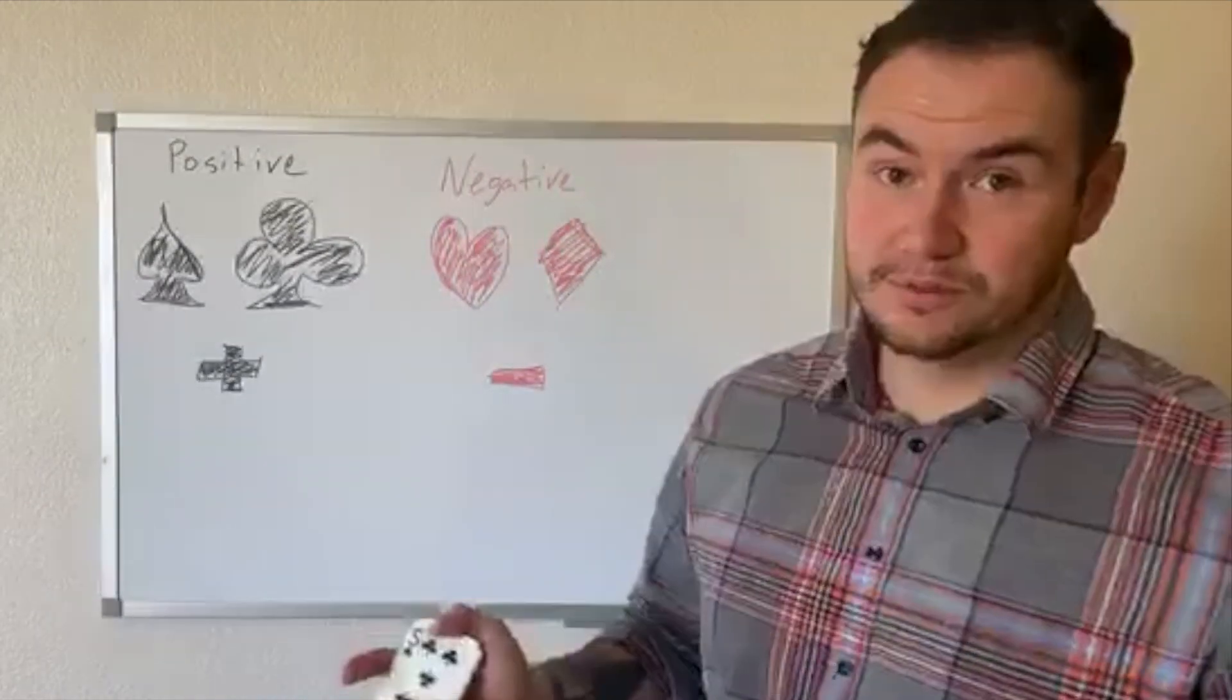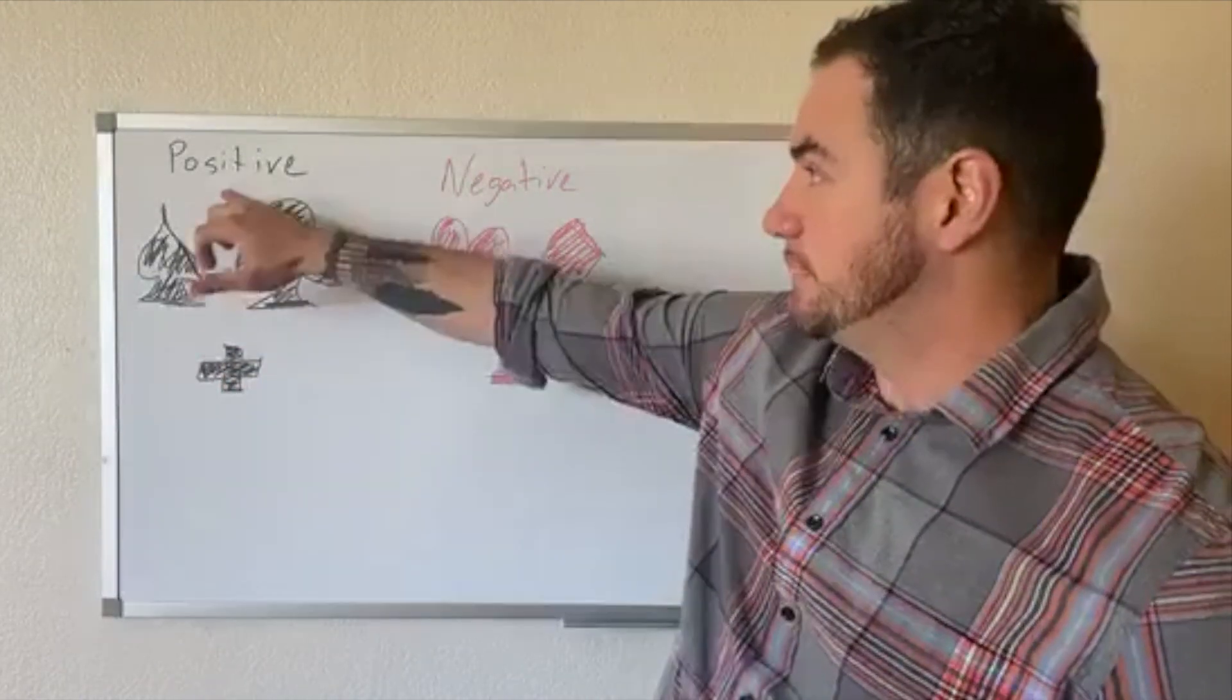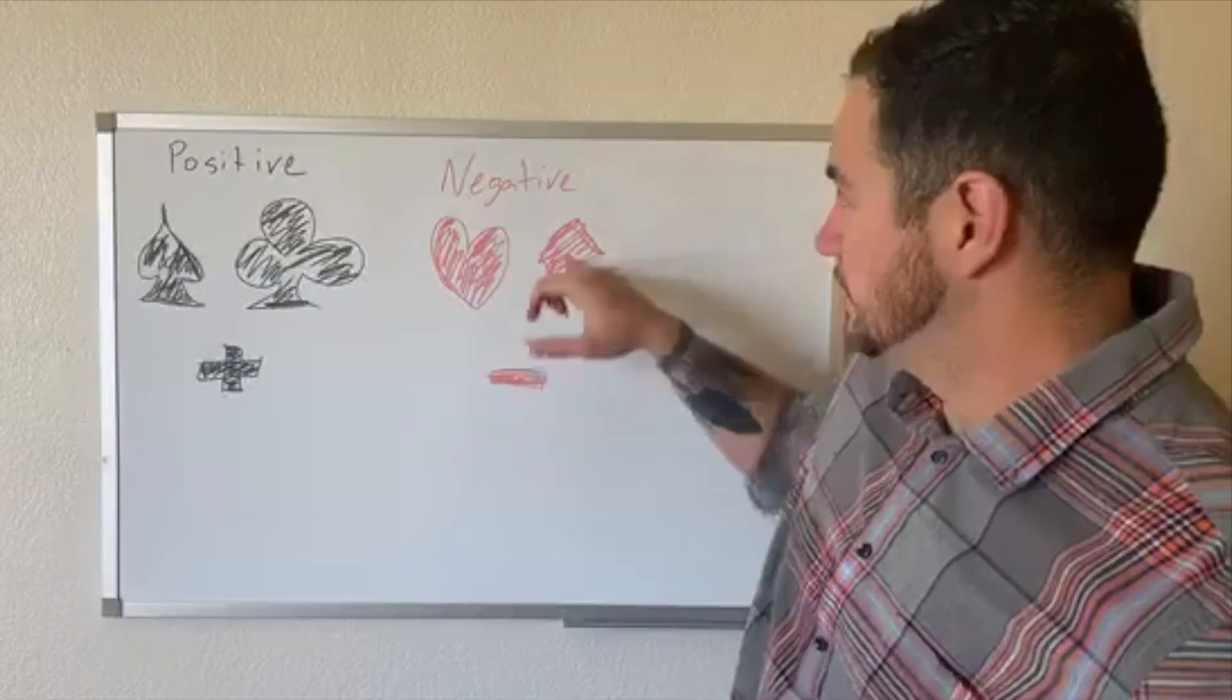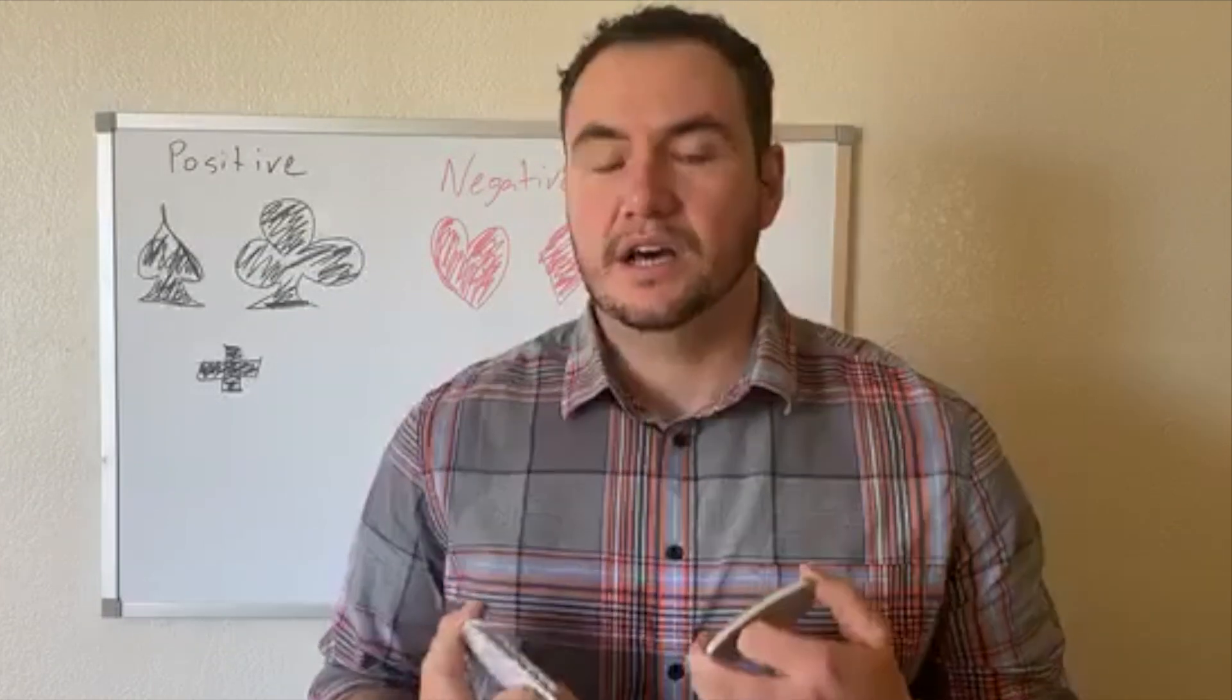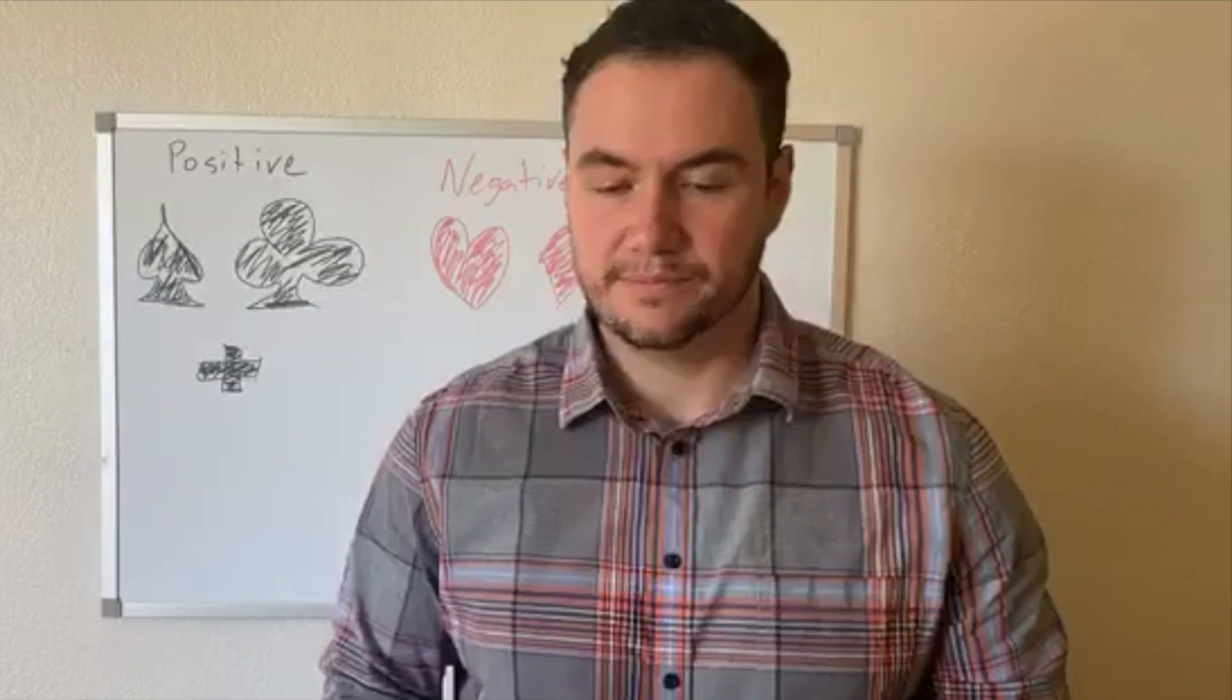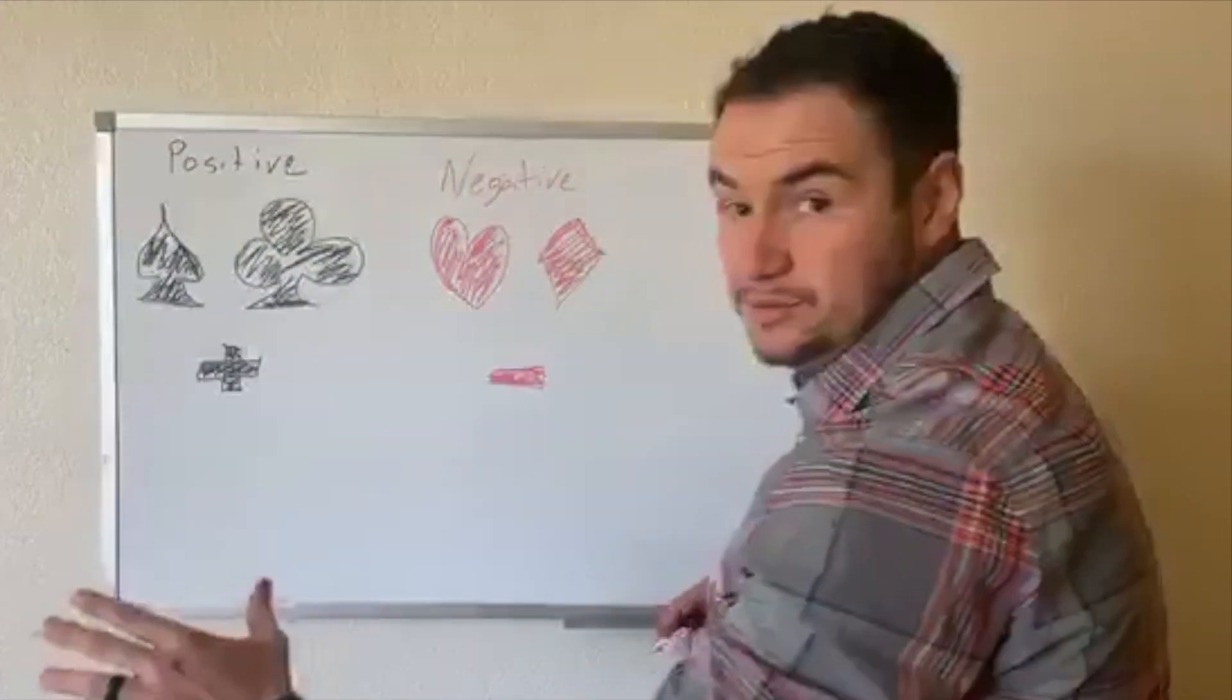So the rules of the game, very simple. Spades and clubs are going to be positive. And then hearts and diamonds are going to be negative. And what's cool about this game is you can do it with any operation, even exponents, parentheses, you can throw in order of operations down the road. But to start, we're just going to use addition. That's kind of how you want to start anyway.